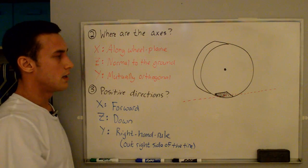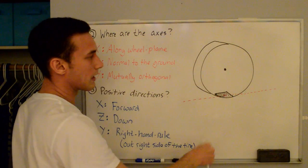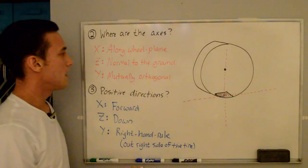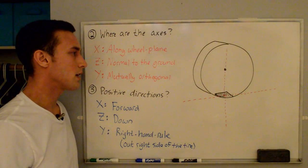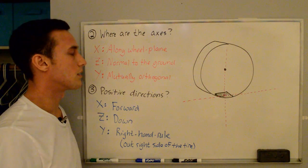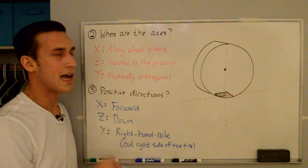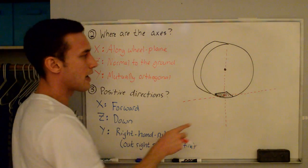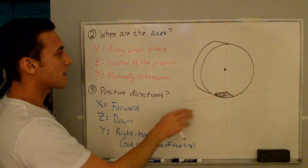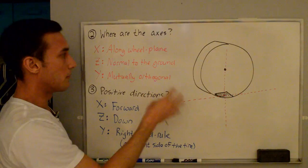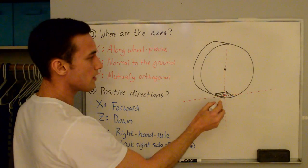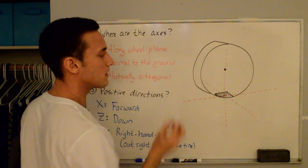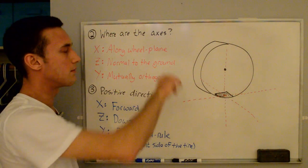The Z axis is normal to the ground, so it's pointing up and down like this. And then the Y axis — since we're talking about a Cartesian coordinate system where all the axes are mutually perpendicular or orthogonal — the Y has to be mutually orthogonal to both the X and the Z. The X and the Z form the wheel plane, so the Y comes out of the side of the tire on both sides.